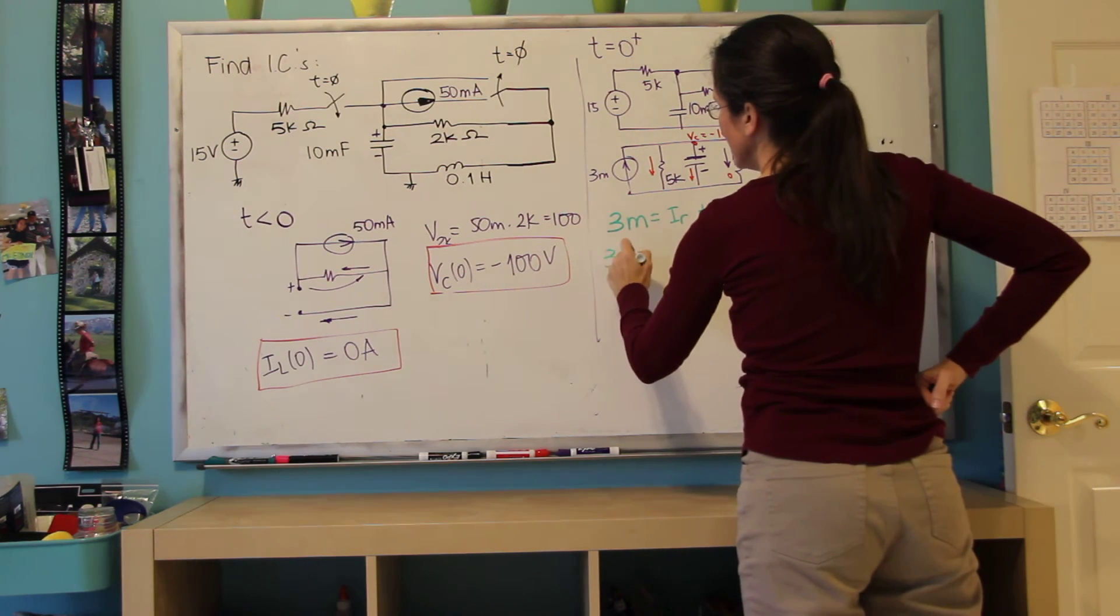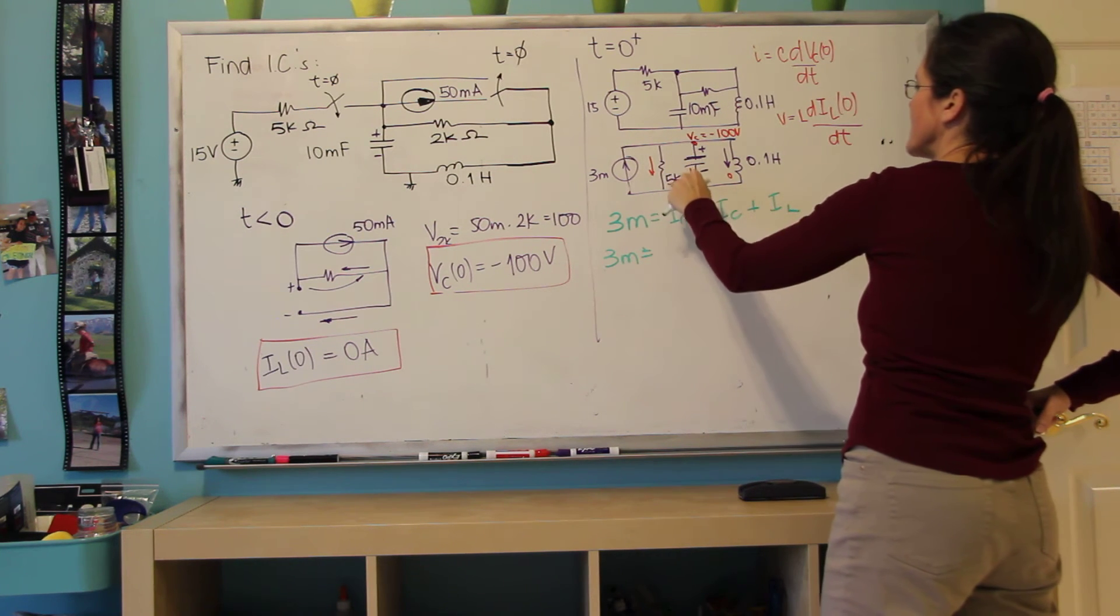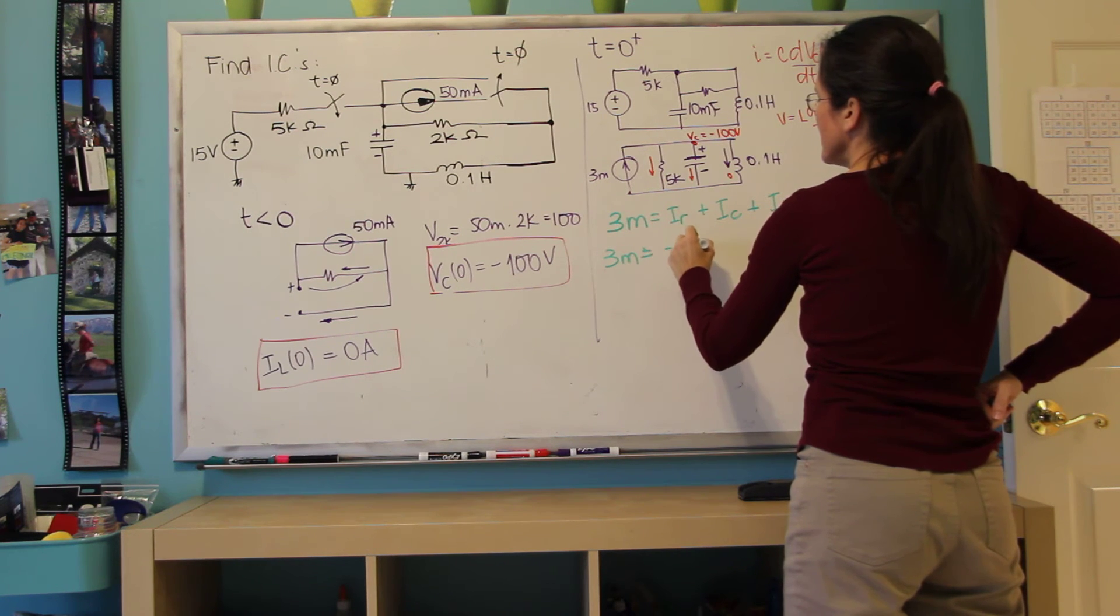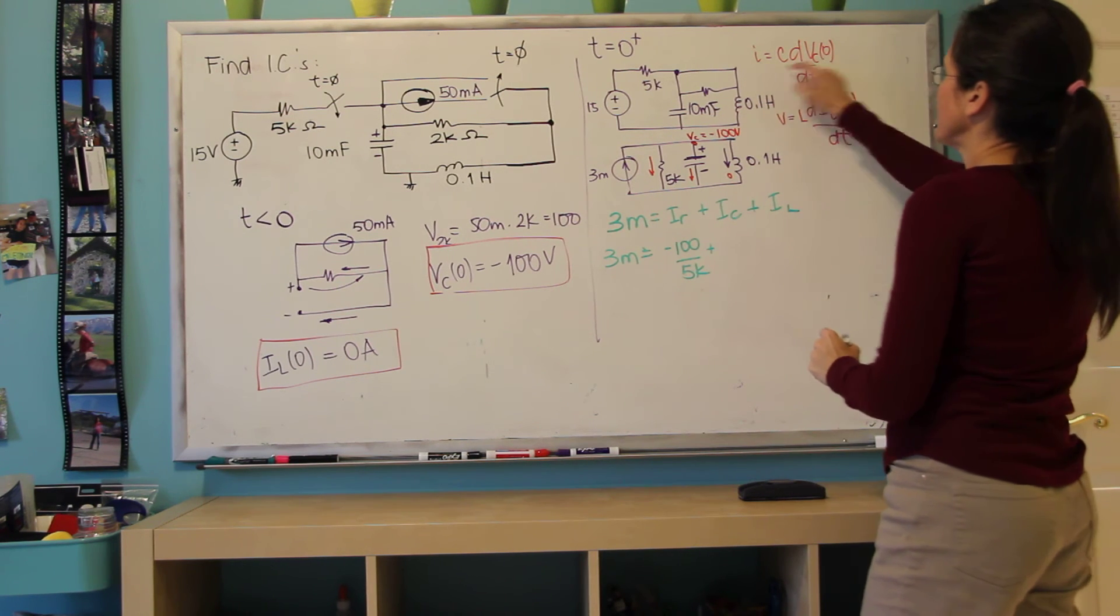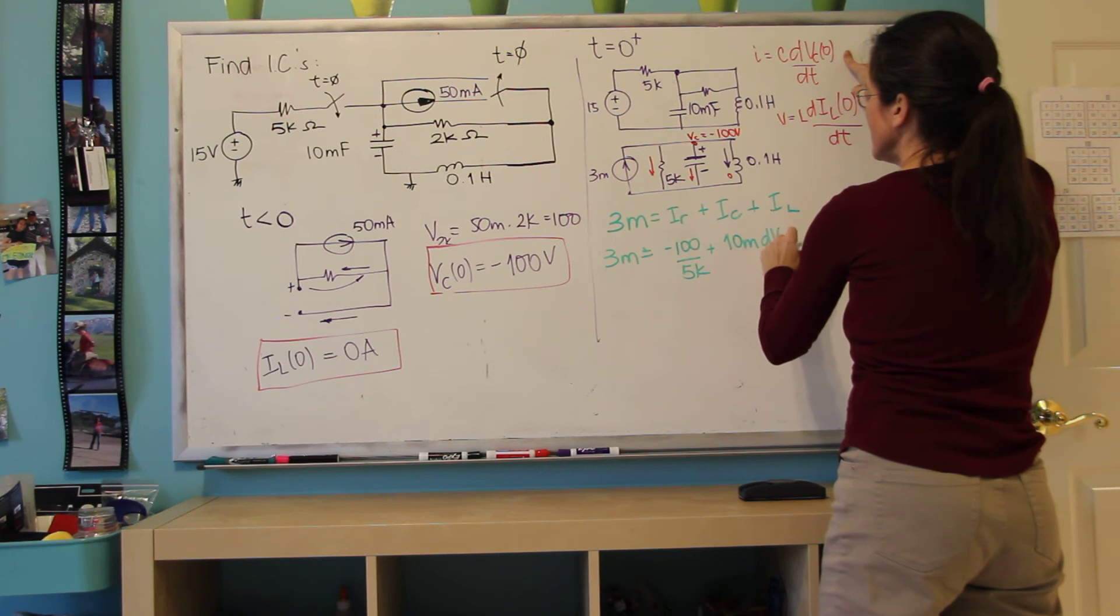And now I can use Ohm's law for the IR, which is this voltage divided by 5k. So it's minus 100 divided by 5k. The current through the capacitor is c, 10 milli, dvc dt.